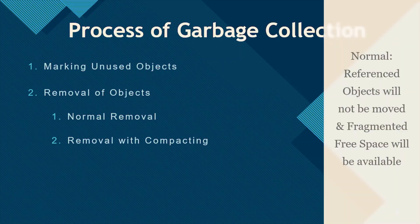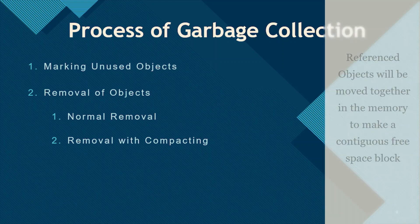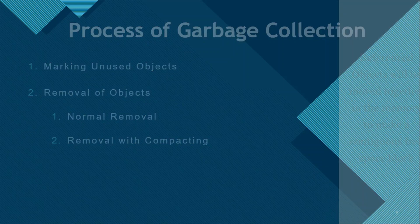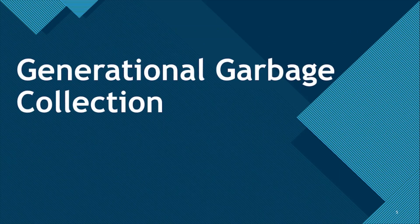In the second step, deletion, there are two types: normal deletion and deletion with compacting. Normal deletion removes the unreferenced objects, leaving the referenced objects and pointers to free space. The memory allocator holds references to the blocks of free space where new objects can be allocated. For deletion with compacting, in addition to freeing up space, the garbage collector moves all referenced objects together to make a bigger chunk of memory free, making memory allocation much easier and faster.